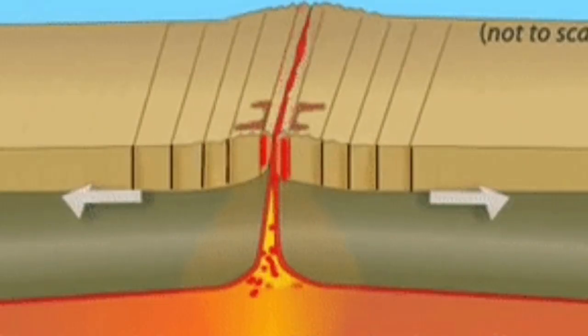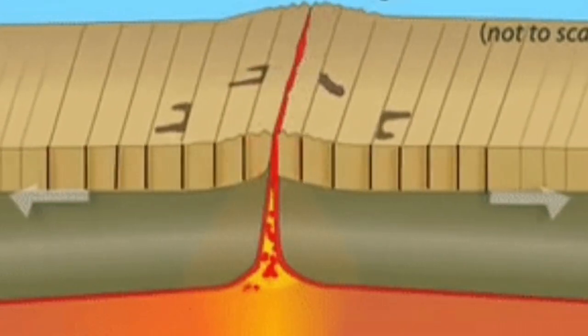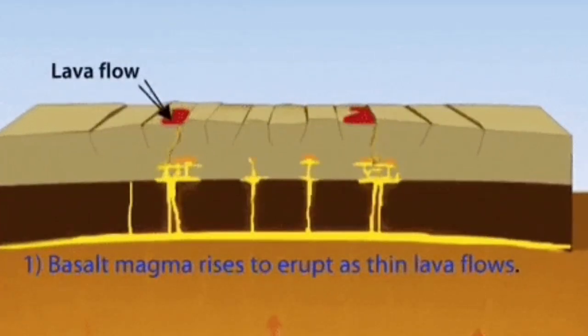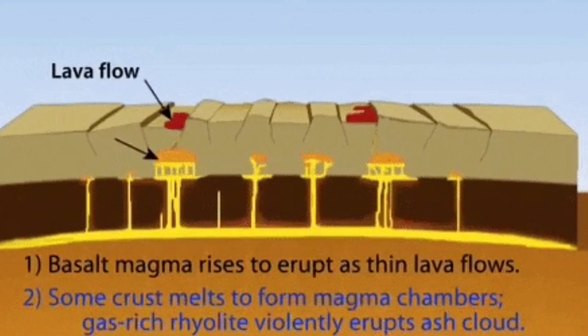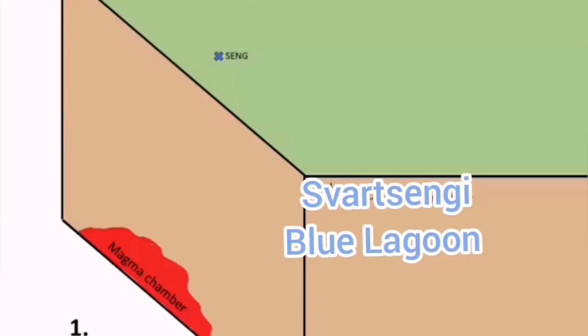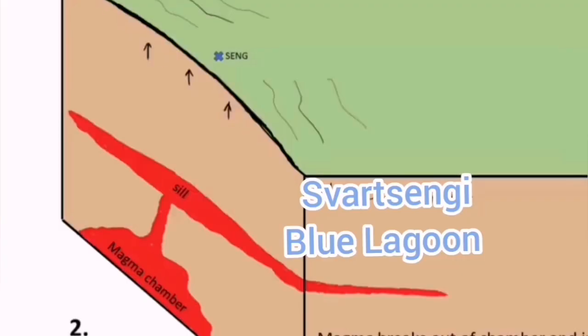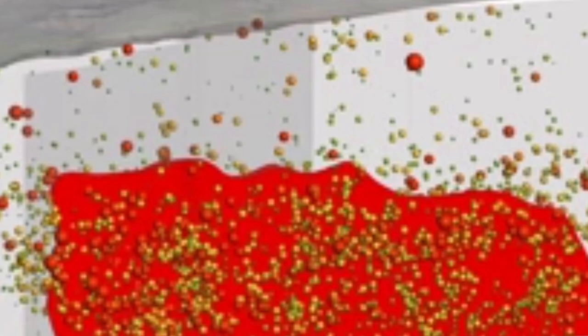Where the uplift of the material creates new oceanic crust, and when it is on land, creates new land. The eruption happens when the magma rises to the surface through the rocks, gradually through the earthquakes, creating its pathway.